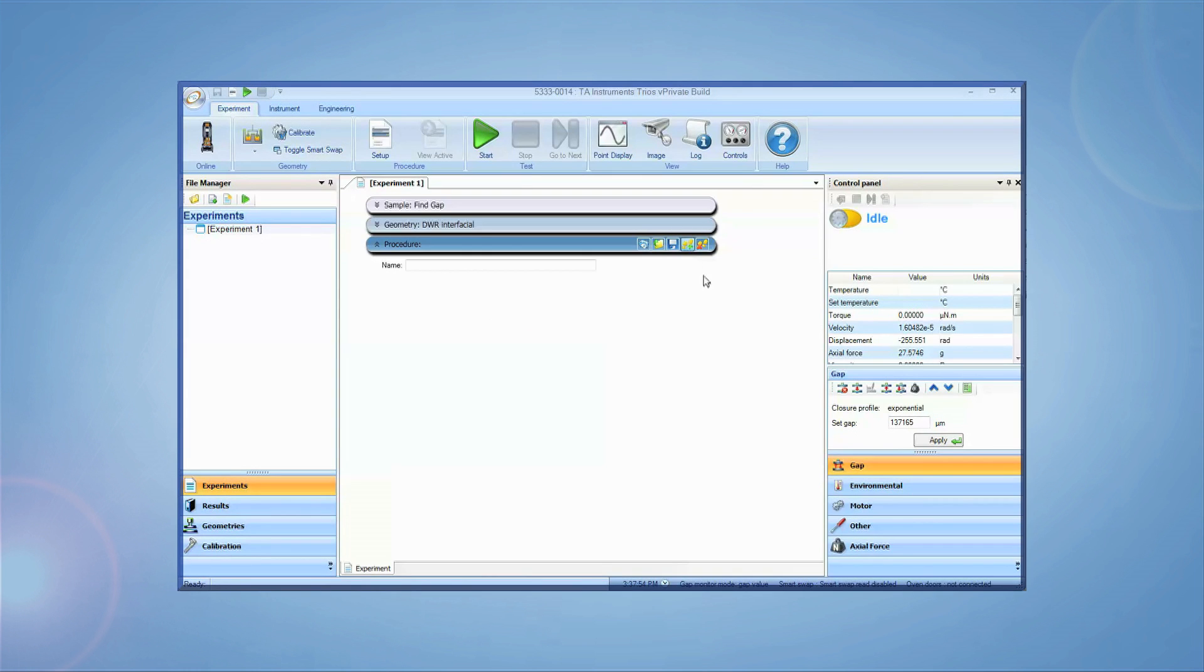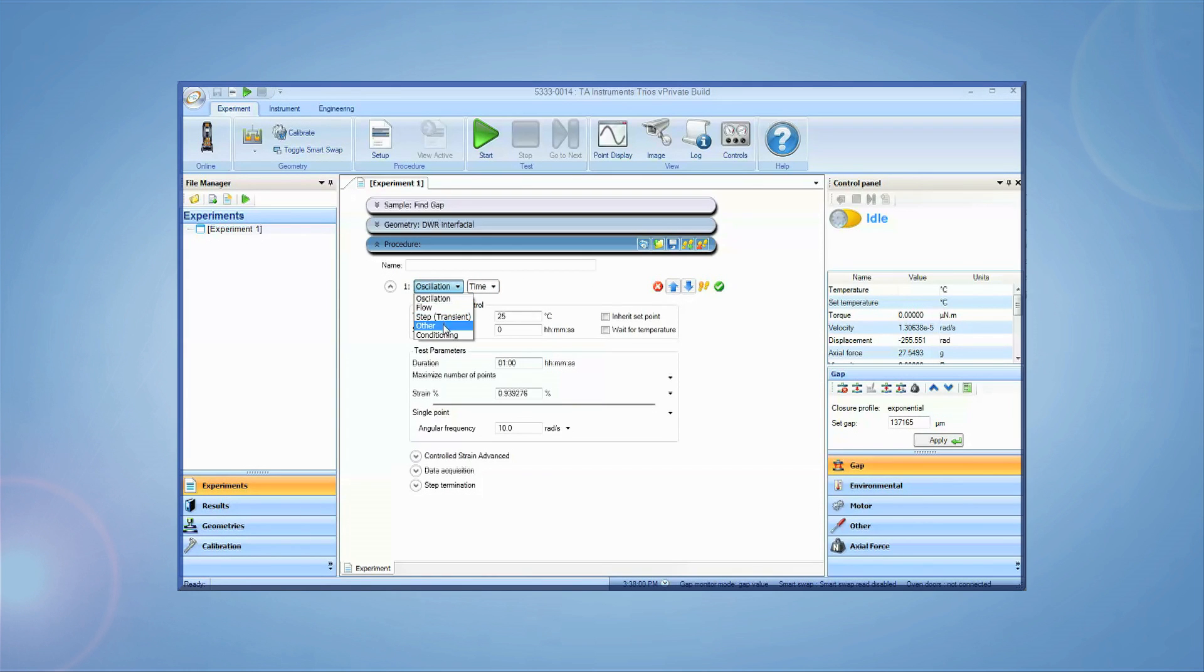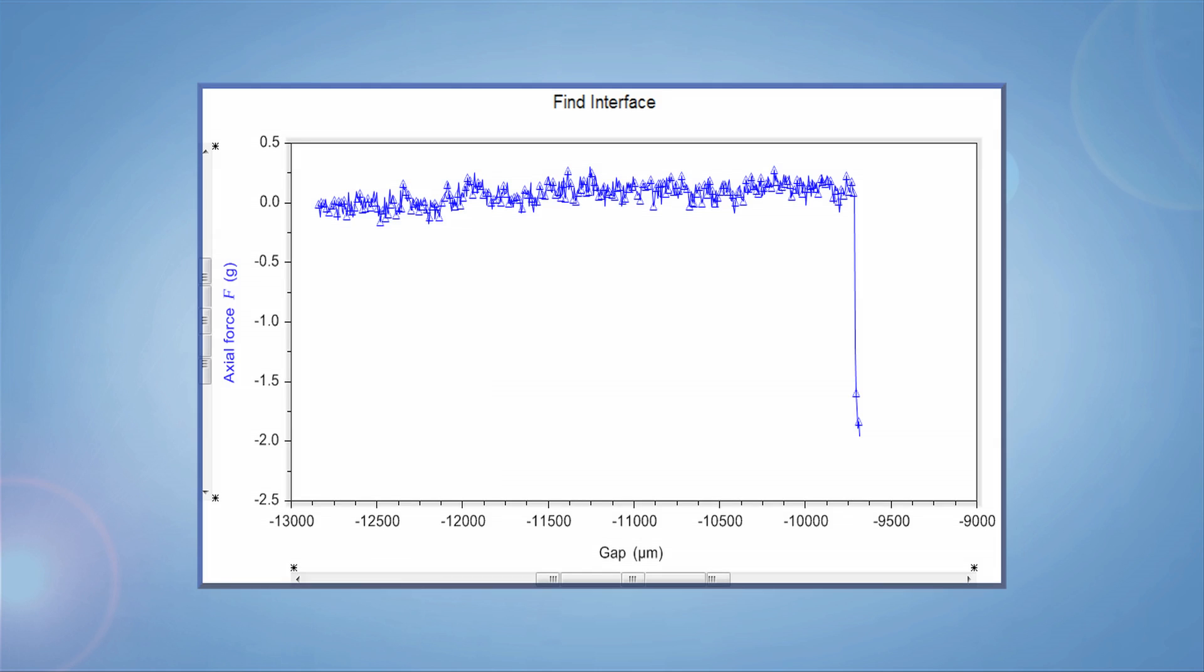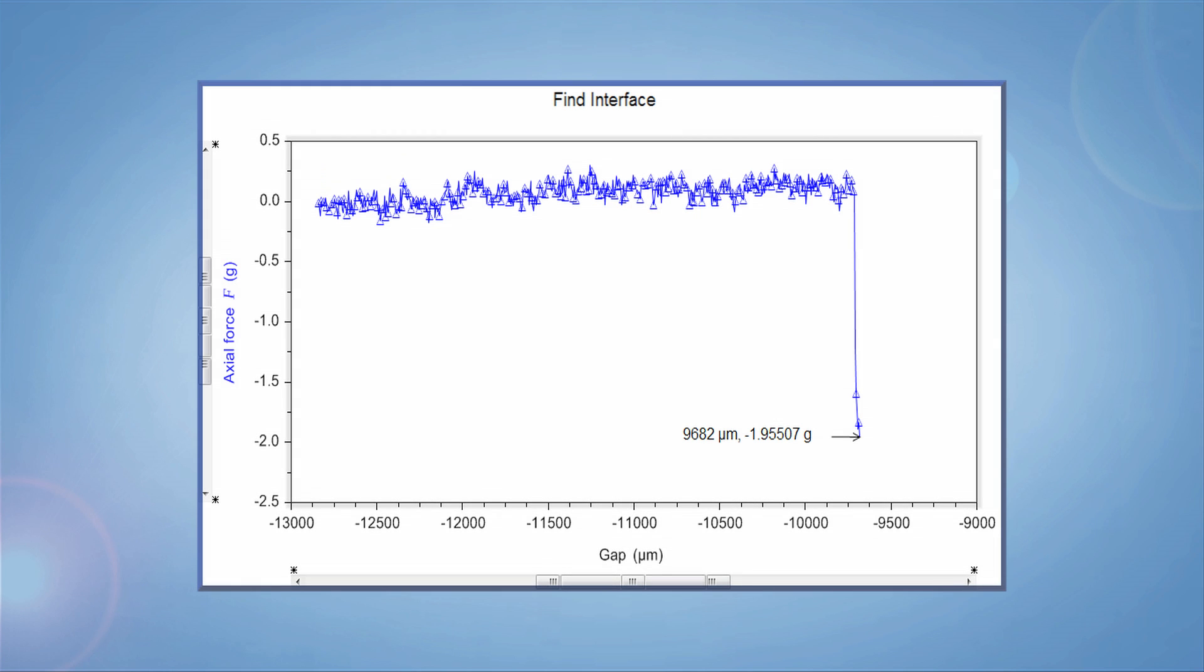Another option is to use the instrument signals to see when the ring touches the surface. Set up a procedure in TRIOS for an axial test in compression direction using a gap speed of 10 microns per second. Next, zero the axial force transducer and start the test. In the graph view, plot axial force and gap. When the bottom of the edge of the ring makes contact with the surface of the sample, the axial force will drop sharply by one or two grams. As soon as this happens, stop the test and make note of the gap height at the point of contact.